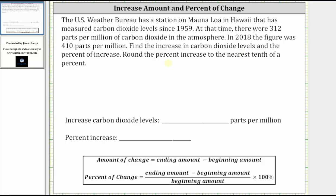Because we're concerned about the increase in carbon dioxide levels and the percent of increase, the important information in this problem is the beginning amount of carbon dioxide and the ending amount. In this case, 312 parts per million is the beginning amount and the ending amount is 410 parts per million.